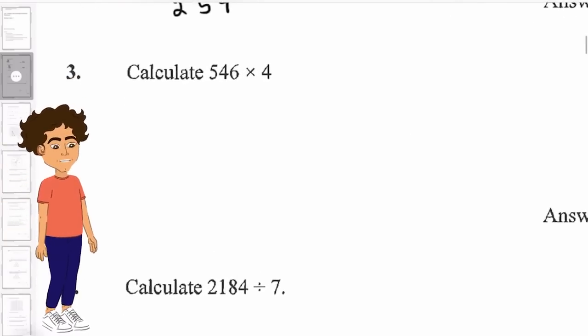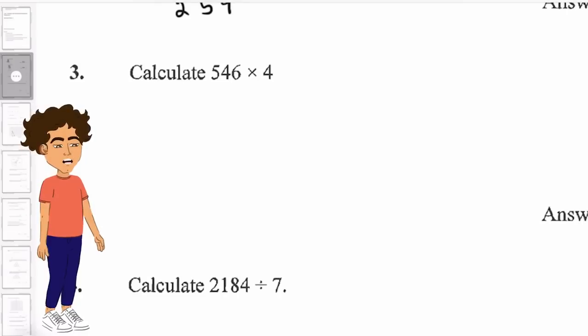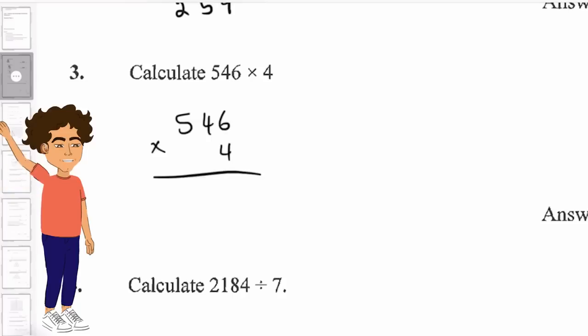Let's now move on to question three. We have 546 times 4. Let's go with our column method. We have 6 times 4, which is 24. We carry the 2.